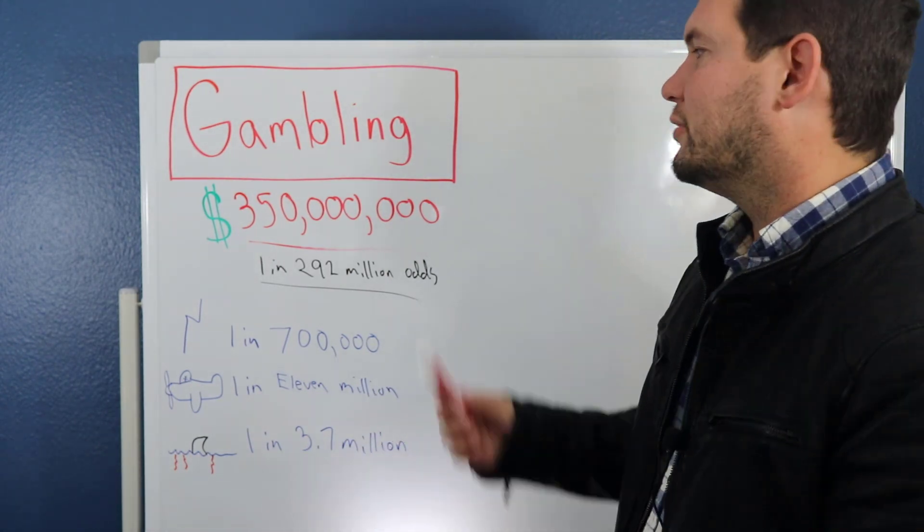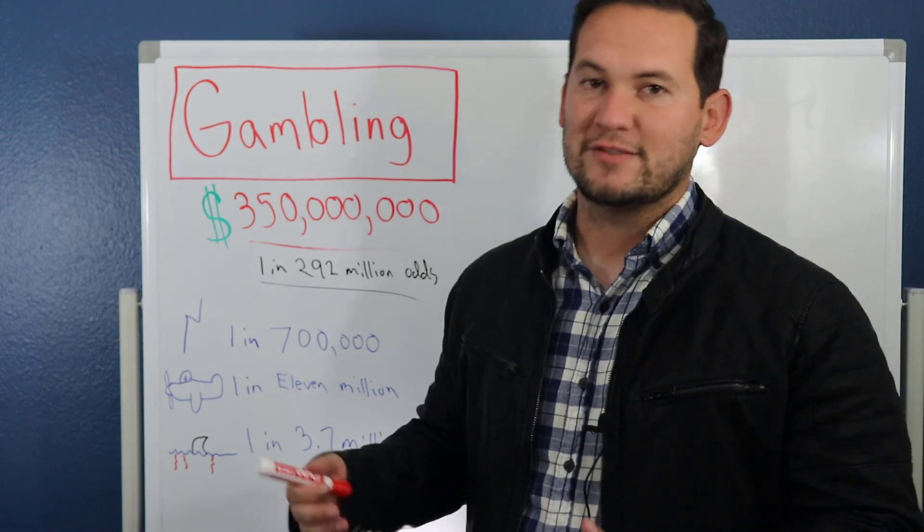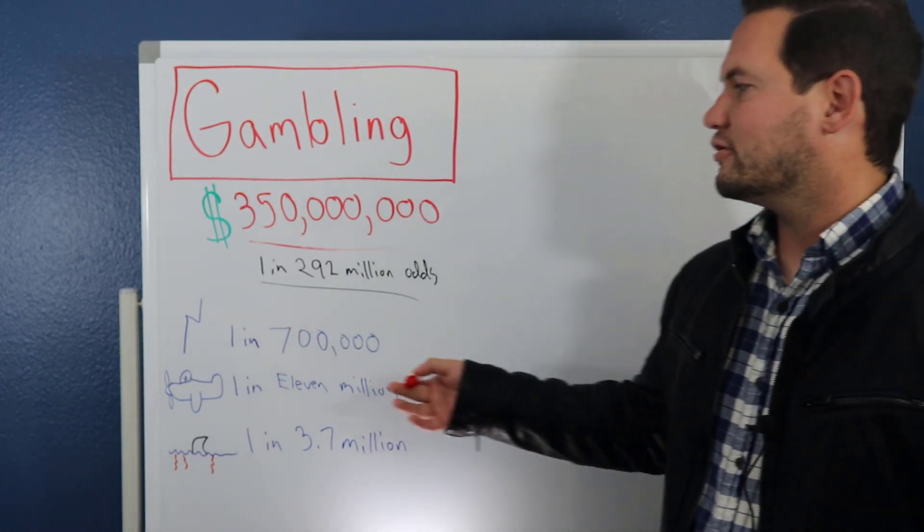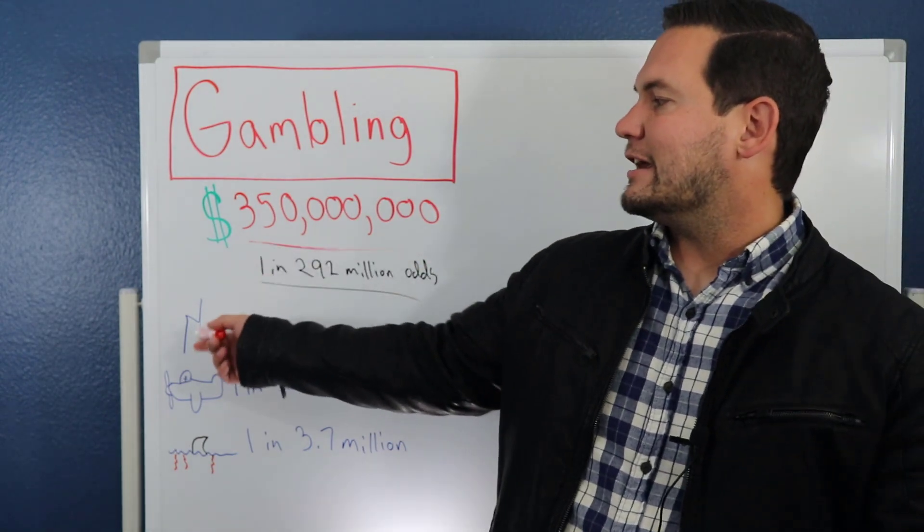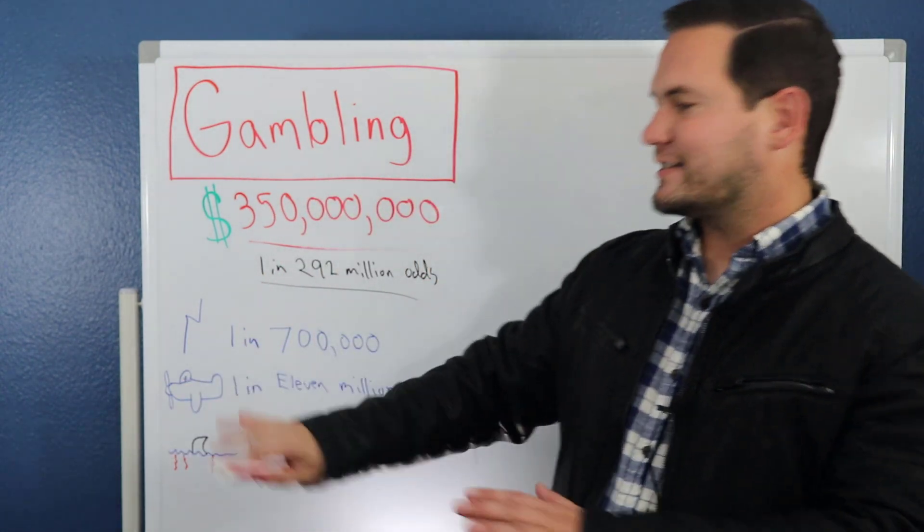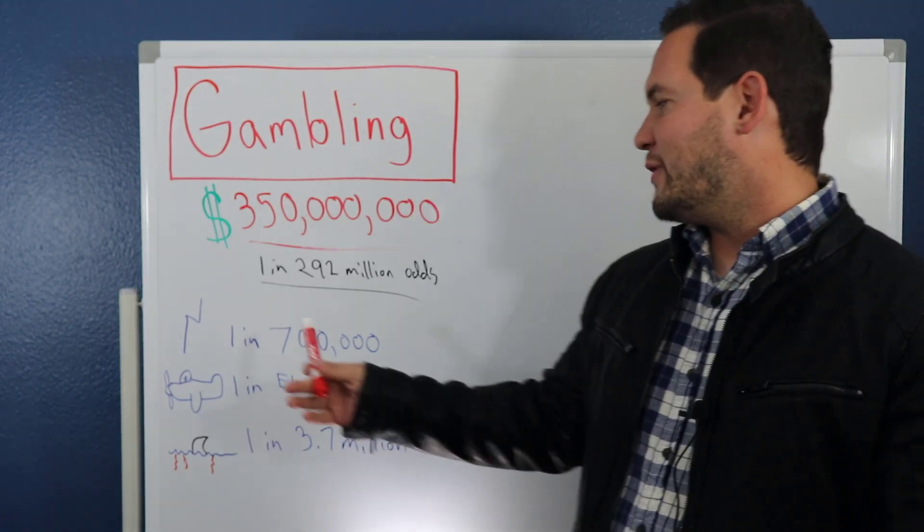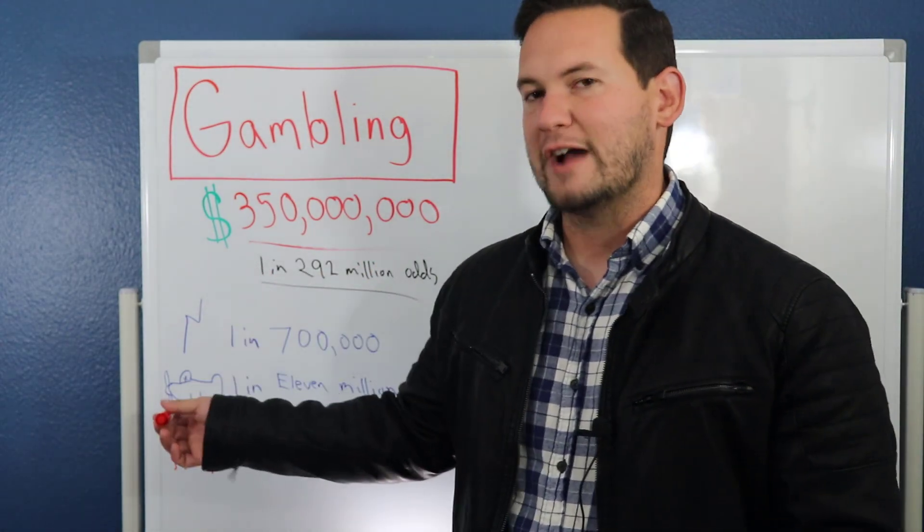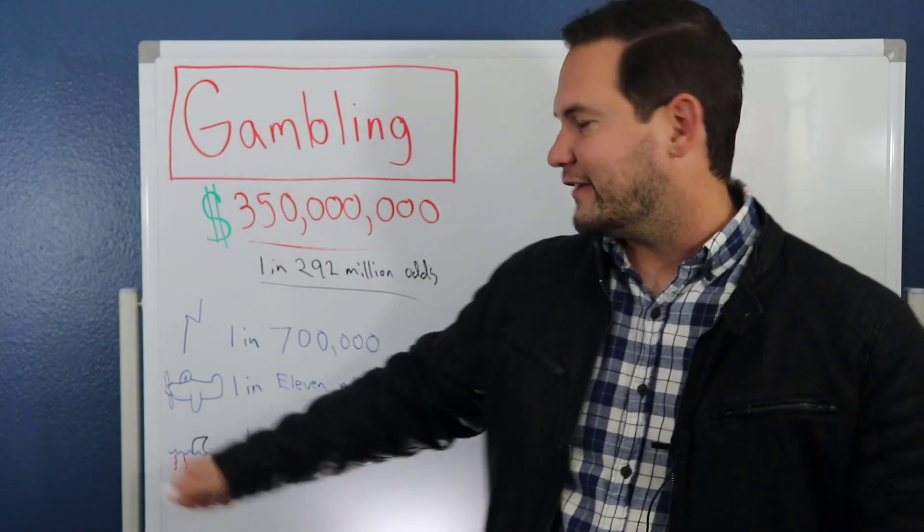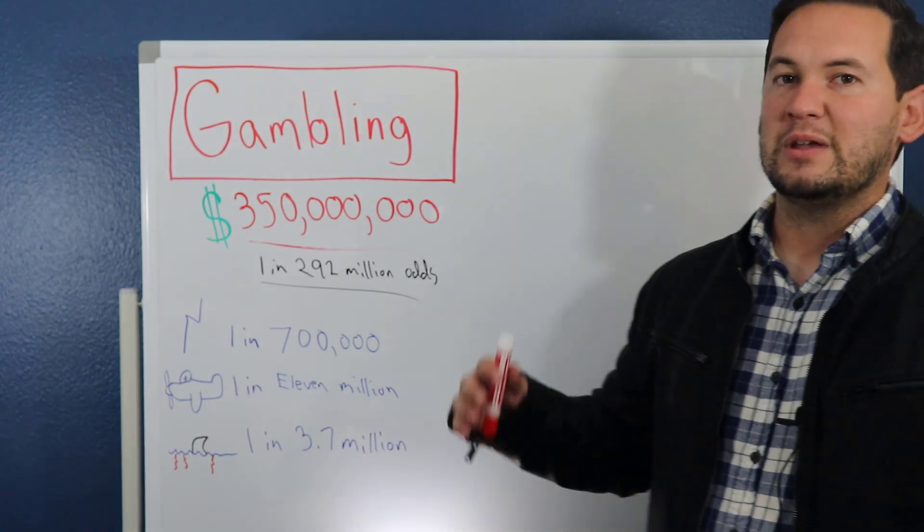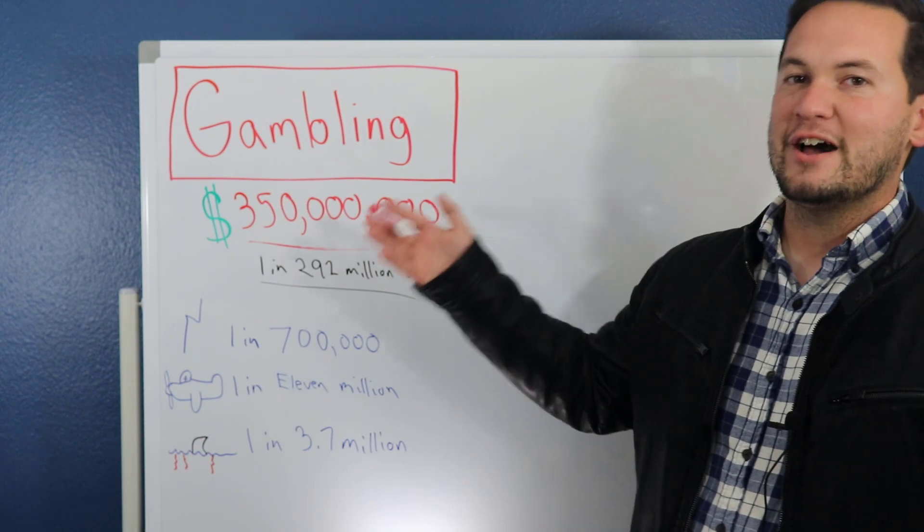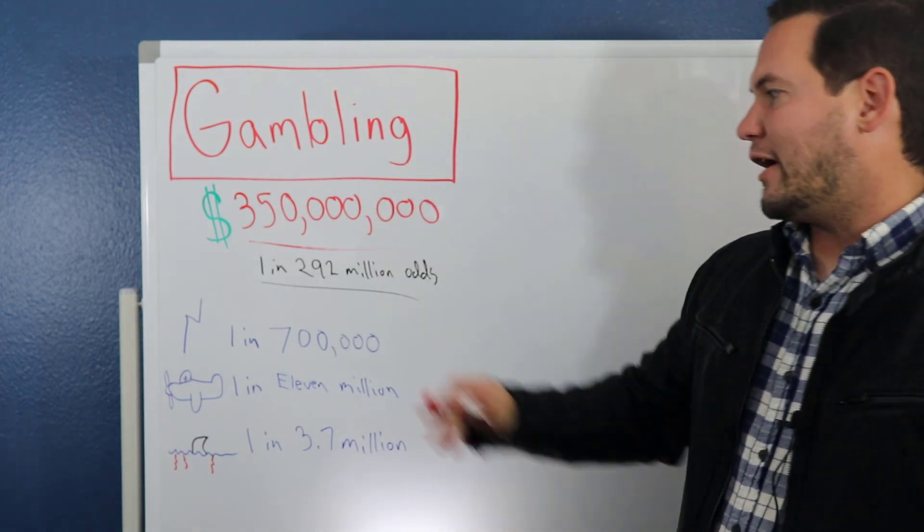Unfortunately, a lot of people like to do this. I put up on the board some other things that you have a greater chance of doing. This is a little lightning symbol - I know it's not the greatest - but you have a 1 in 700,000 chance of getting hit by lightning. Much greater chance of being hit by lightning than winning this lotto. This right here is a plane - I know, excellent drawing - you have a 1 in 11 million chance of being in a plane crash. This is a little shark fin and you have a 1 in 3.7 million chance of being bitten and killed by a shark. So you have a much greater chance of any one of these over actually winning a $350 million lotto jackpot.